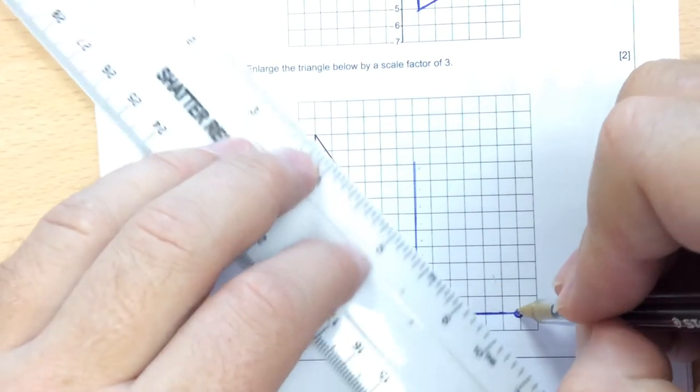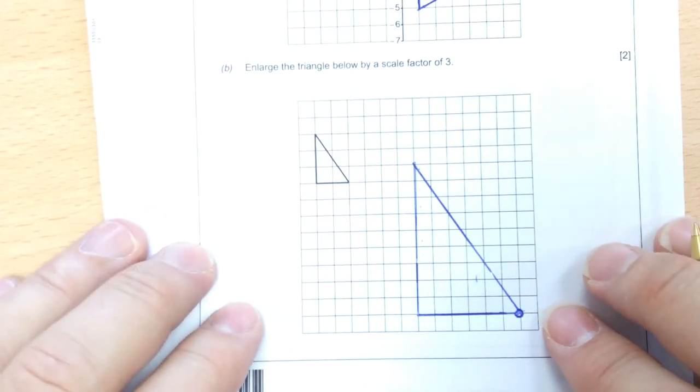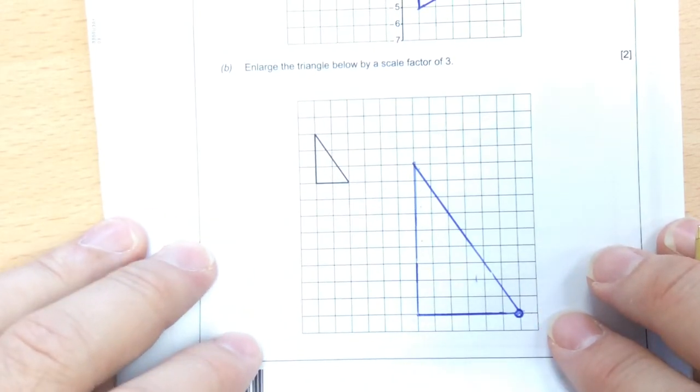And then the last one, because it's a diagonal straight from corner to corner, I can just join that one up with a ruler. So that shape is now 3 times bigger than the last one.